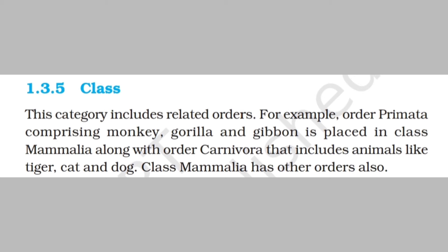The next higher category is Class, which includes related orders. For example, order Primata — which includes Monkey, Gorilla, and Gibbon — is placed in class Mammalia, along with order Carnivora, which includes animals like Tiger, Cat, and Dog. Class Mammalia has other orders also.